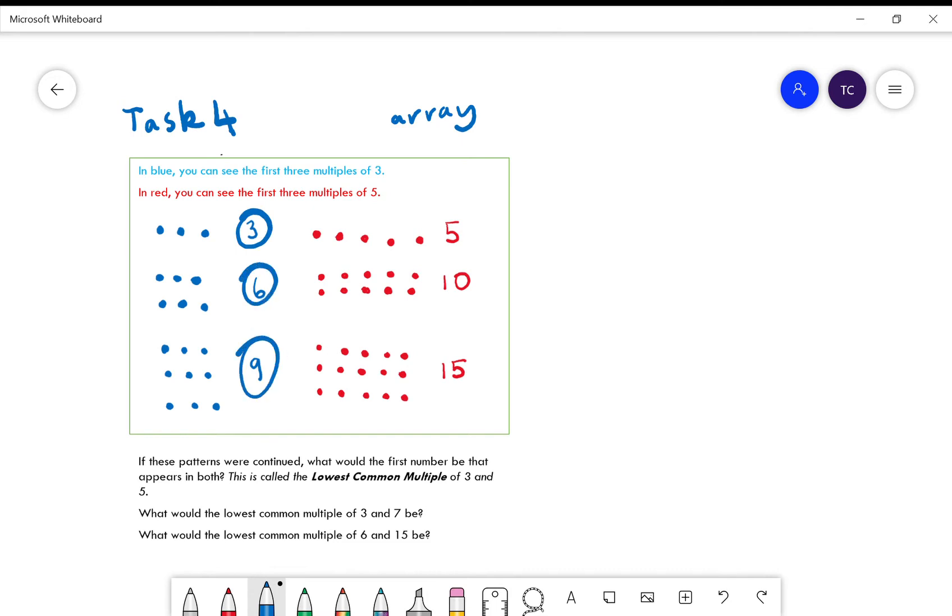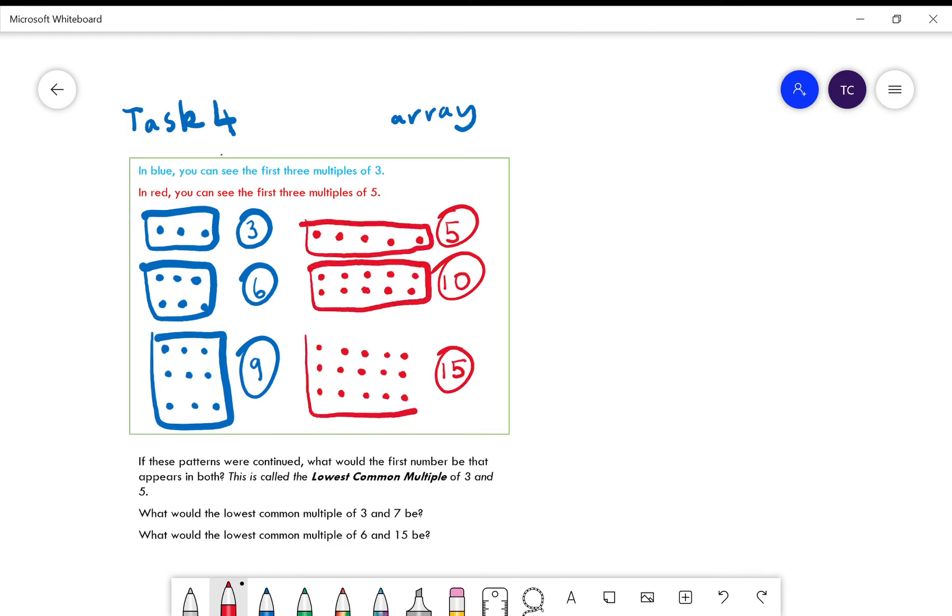In blue you can see the first three multiples of three, so we've got 3, 6, 9. And then over here we've got 5, 10, 15, so you've got your 5, your 10, and your 15.